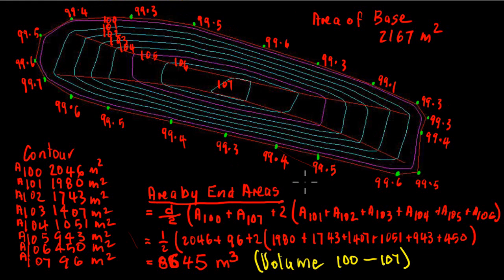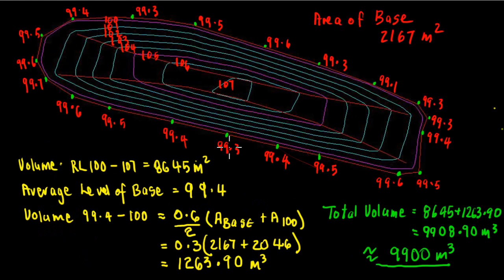Now there is another way that we could have dealt with that, and that is we could have found out the average height of the base and then started with an index contour at that level and then moved up from there. That would be another way of dealing with it, but we'll move ahead now and deal with what we've got here. What I've done here is I've got the area of the base which is 2167.